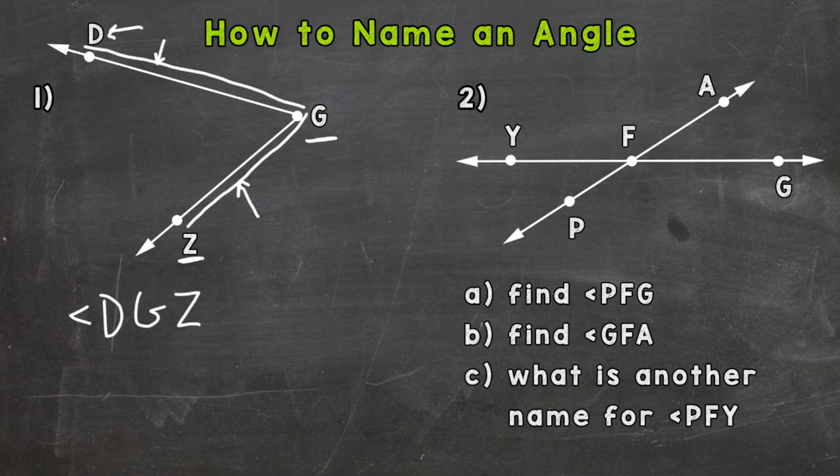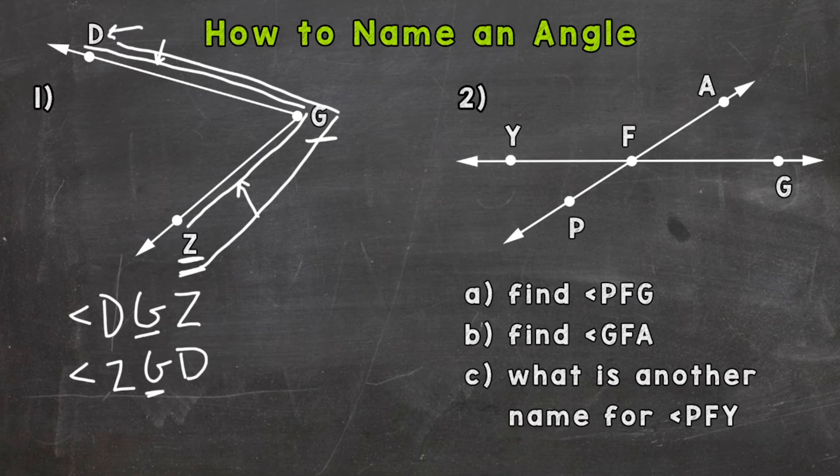Now we can also start at Z here, go up to G. So start at Z, go up to G, and then finish by going up to D. Notice the order of our letters represents the order of how we're drawing that angle, and the vertex is always in the middle. Always in the middle. So we could either do angle DGZ or angle ZGD.